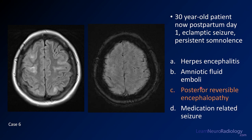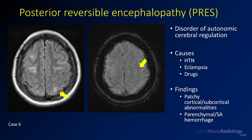This is a case of PRES in a patient with eclampsia. What you see is abnormal FLAIR in a predominantly subcortical white matter location with a little cortical involvement. On the blood-sensitive imaging, there's a small amount of subarachnoid hemorrhage, which can also be associated with PRES. PRES is a disorder of cerebrovascular autoregulation where the end capillaries receive too much pressure. It's typically caused by hypertension, but eclampsia and a long list of drugs are also associated causes.